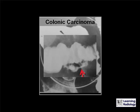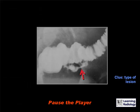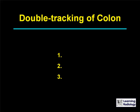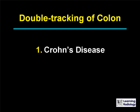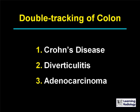The differential is for double tracking of the colon. There are three causes: Crohn's disease, diverticulitis, and adenocarcinoma.